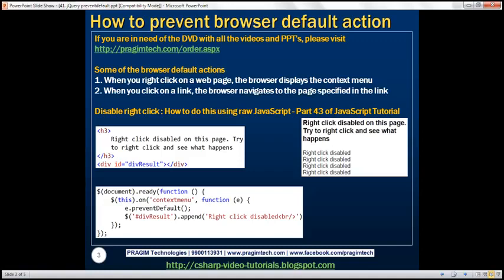When you right-click on a web page, by default, the browser displays the context menu. Similarly, when you click on a hyperlink, by default, the browser navigates to the page specified in the link.